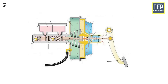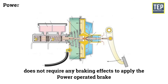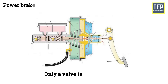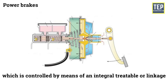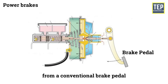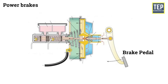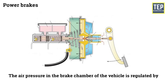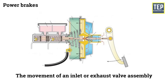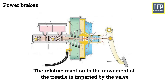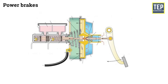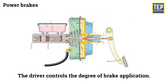Power brake. The driver does not require much braking effort to apply the power operated brake — only a valve needs to be controlled. In this system, the brakes are controlled by a brake valve, which is controlled by means of an integral treadle or linkage from a conventional brake pedal. The air pressure in the brake chamber of the vehicle is regulated by the movement of an inlet or exhaust valve assembly. The movement of the assembly is controlled by the movement of the treadle, and the relative reaction is imparted back to the driver through the valve. The driver controls the degree of brake application.